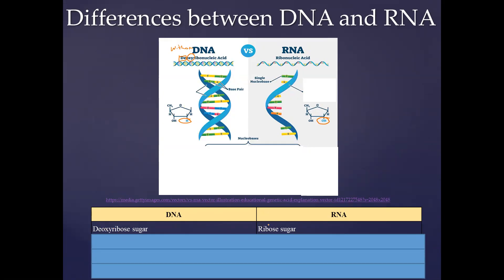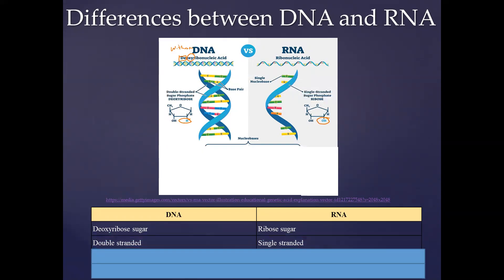Another difference that is quite glaring if you look at the image: you can see that DNA is double-stranded—there are two strands—whereas RNA is only made of one strand.